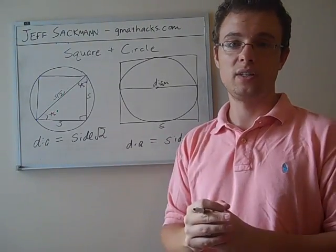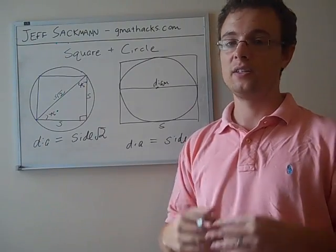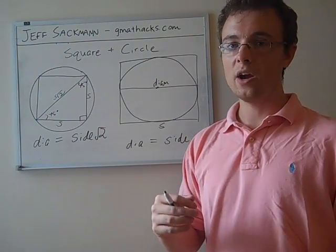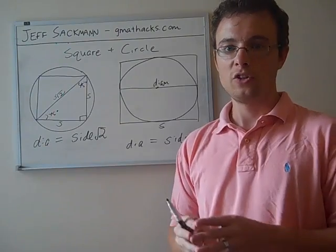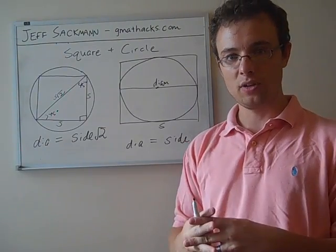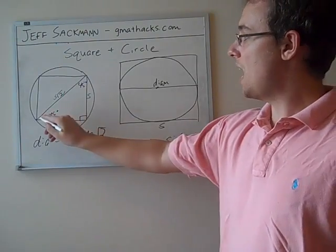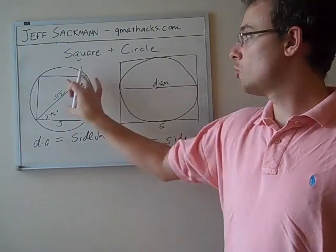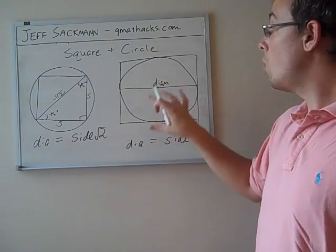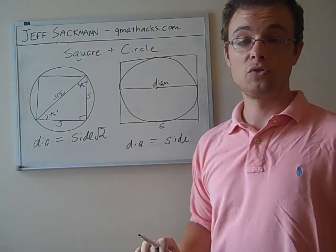Again, because a circle or a square, they really only have that one dimension that matters, so once you've made that single connection, that's all it takes. And usually, as we've seen, that connection happens through the diameter, whether the square is inscribed in the circle or the circle is inscribed in the square.